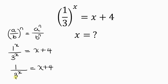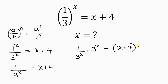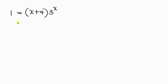Our next step will be to clear the fraction by multiplying both sides of the equation by 3 to the x. On the left I have 1 all over 3 to the x, multiplied by 3 to the x. On the right I have x plus 4 multiplied by 3 to the x. Notice that 3 to the x cancels out 3 to the x, leaving 1 equal to x plus 4 times 3 to the x. So flipping their positions: x plus 4 times 3 to the x equals 1.